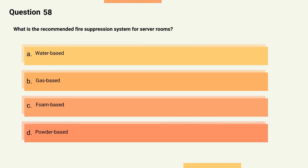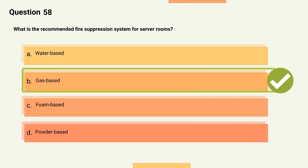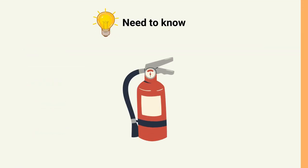Question 58: What is the recommended fire suppression system for server rooms? Options: A) Water-based, B) Gas-based, C) Foam-based, D) Powder-based. The correct answer is Option B, Gas-based. Explanation: Water-based fire suppression systems can cause more harm to servers and other electronic components.